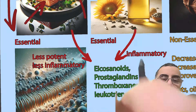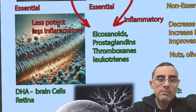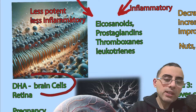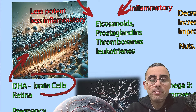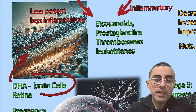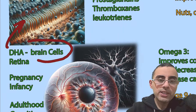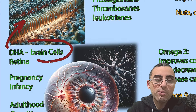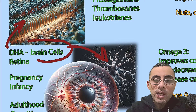Omega-3 is essential in many cases. For example, it's important for forming brain cells and for the formation of the lipid membrane of brain cells — and not only in the brain but in the whole body, especially the brain. It's also important for children's development during pregnancy and during infancy.